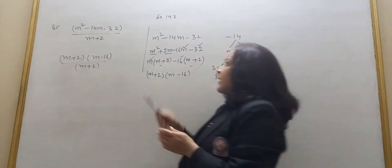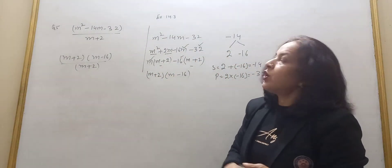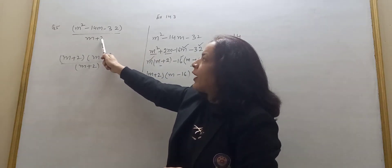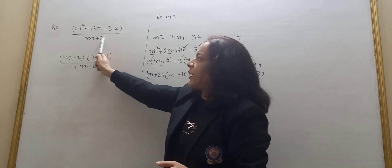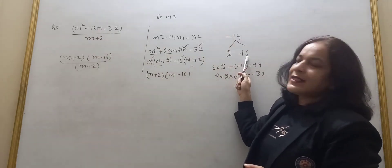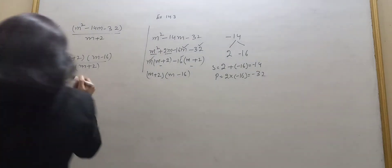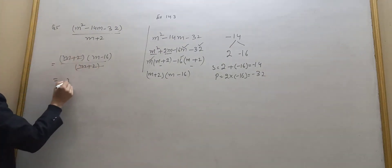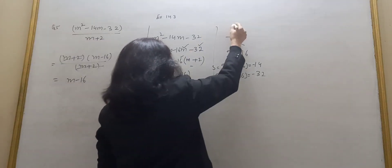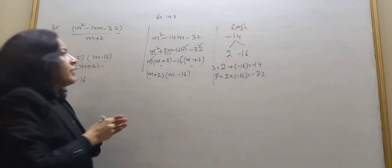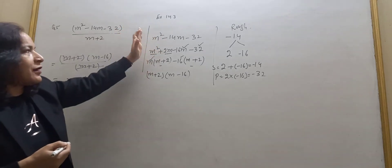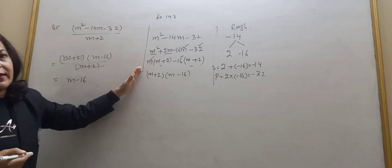Students, one important hint: if you have a problem breaking the middle term, in this type of question the denominator gives you a hint. Here one factor is m plus 2, so when you break 14, one of the parts must be plus 2. That's where minus 16 comes from. Now this m plus 2 cancels with m plus 2, and your answer is m minus 16. This is the rough work.